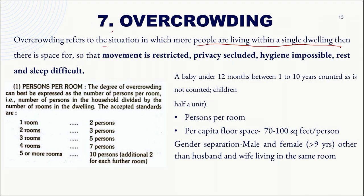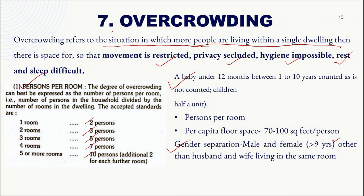Overcrowding refers to a situation where people live within a single dwelling with so little space that movement is restricted, privacy is compromised, hygiene is impossible, and rest and sleep are difficult. Operationally, overcrowding is identified using three criteria: (1) persons per room — one room for 2 persons, two rooms for 3, three rooms for 5, four rooms for 7, five or more rooms for 10 with 2 additional per extra room; (2) gender separation — males and females over 9 years other than husband and wife sharing a room; (3) per capita floor space below 70–100 square feet.